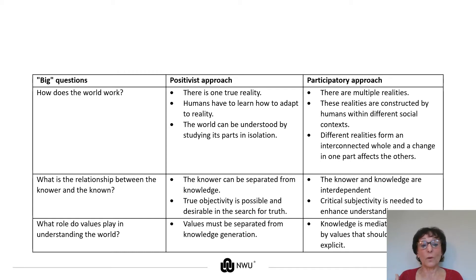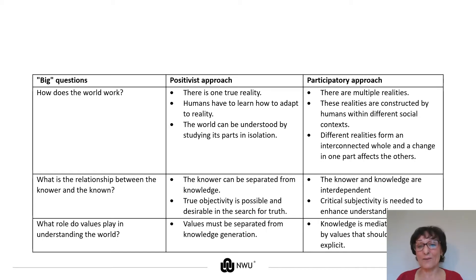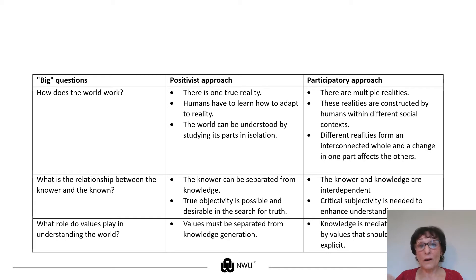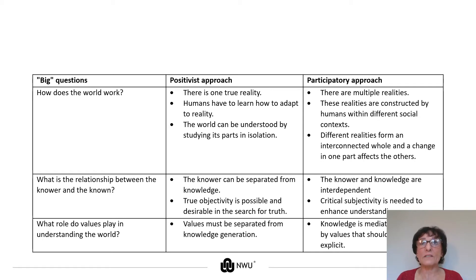What's the relationship between the knower and the known? In positivist research, you have to separate them — objectivity is possible and actually desirable. They do not think it's valid if you bring your subjective feelings and opinions as a researcher. But in a participatory approach, the knower and knowledge are interdependent: if the knower changes, the knowledge changes, and vice versa. Critical subjectivity is needed to enhance understanding — it means understanding myself and what's going on with me, and that's the first stage of participation.